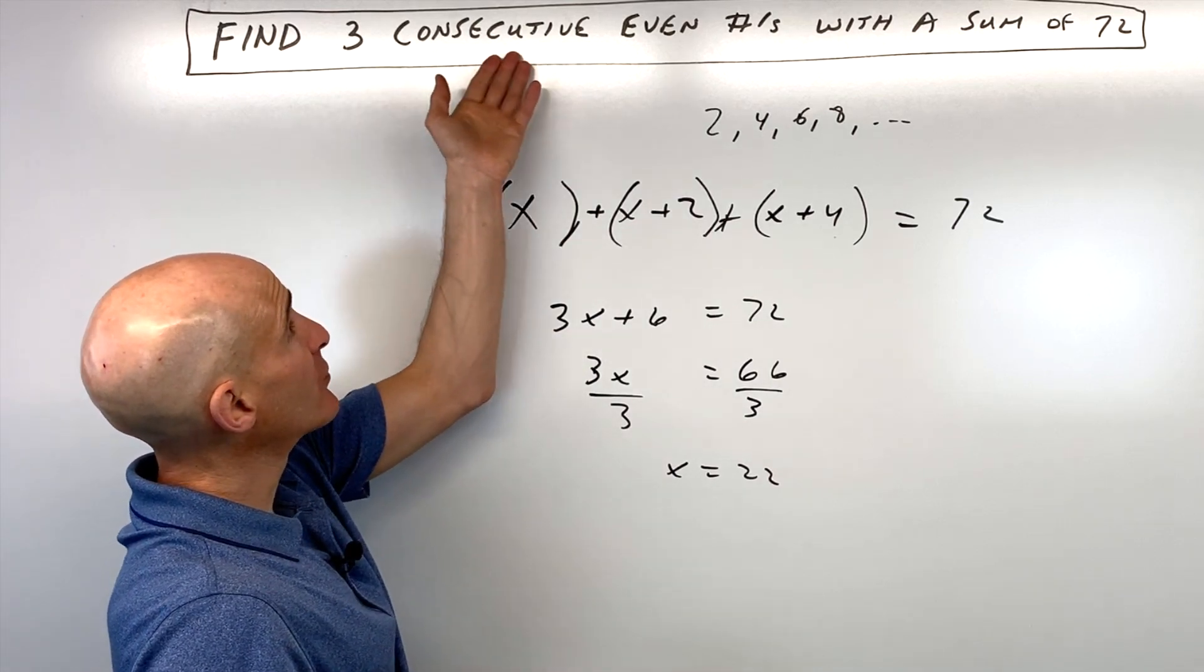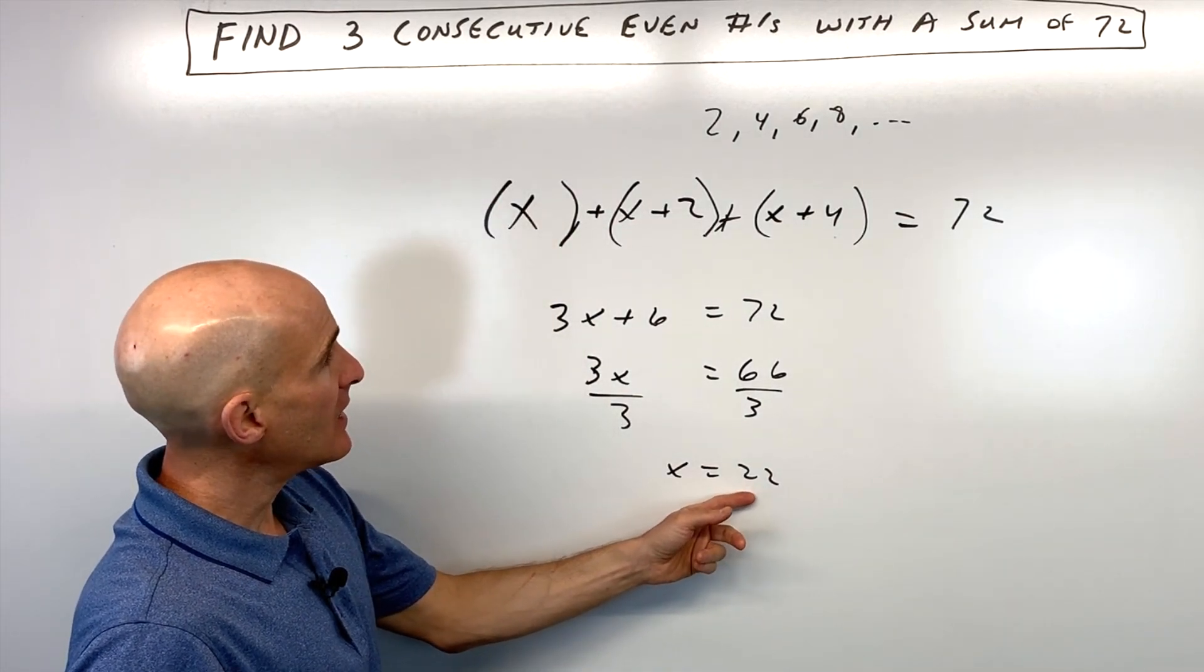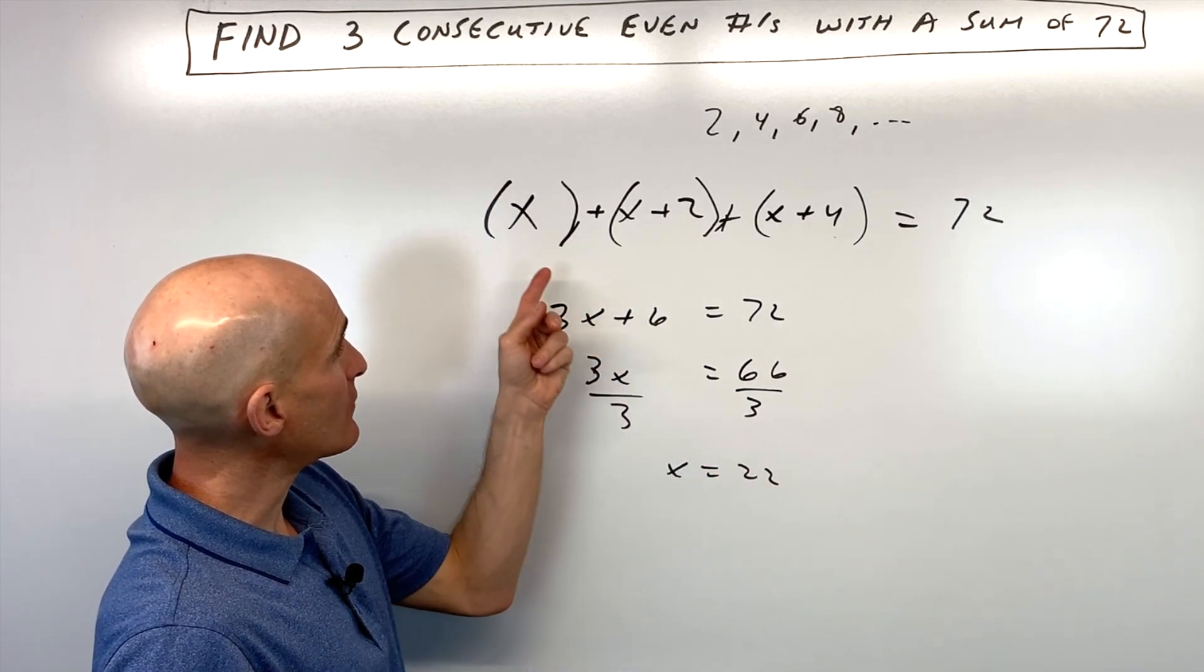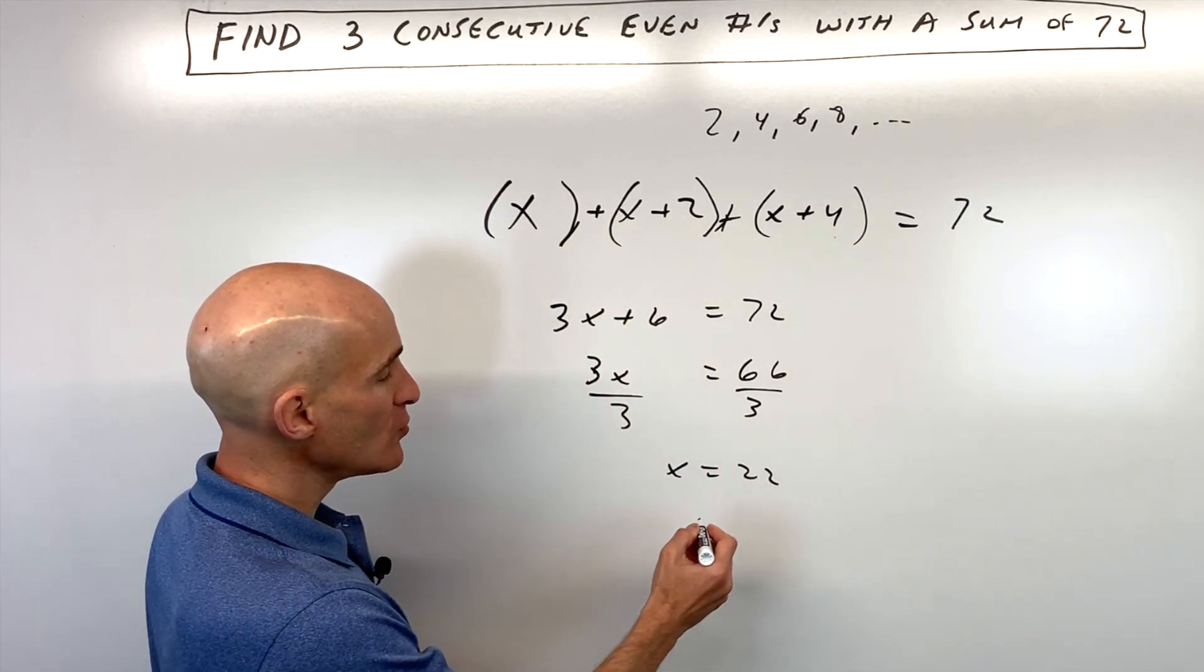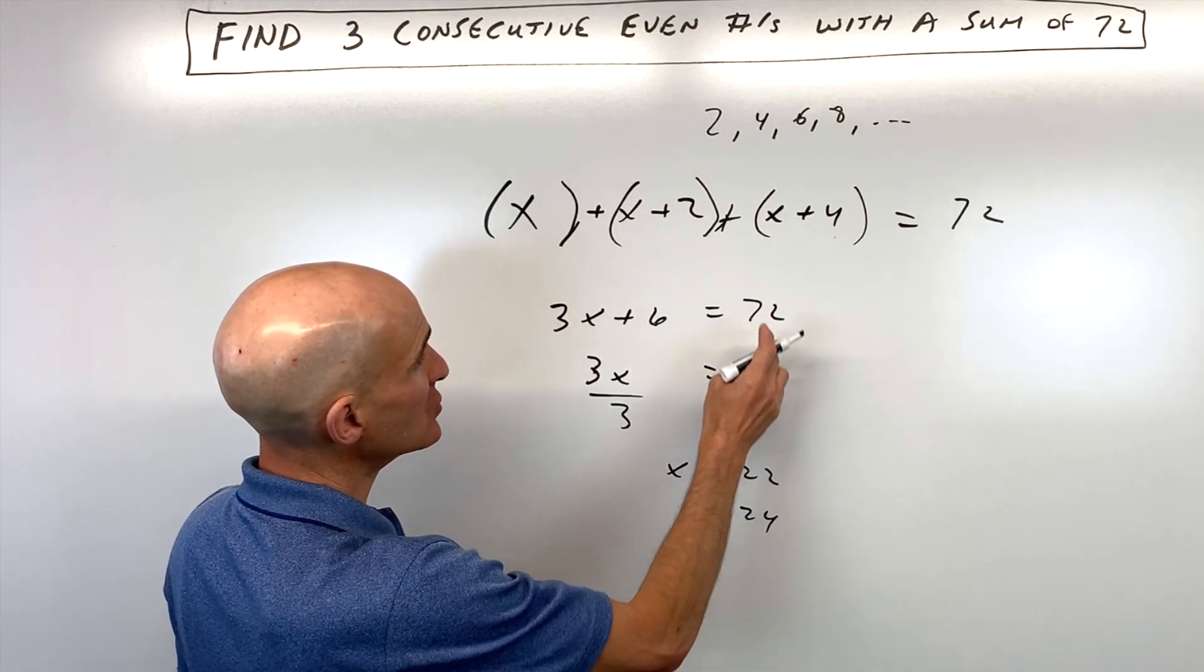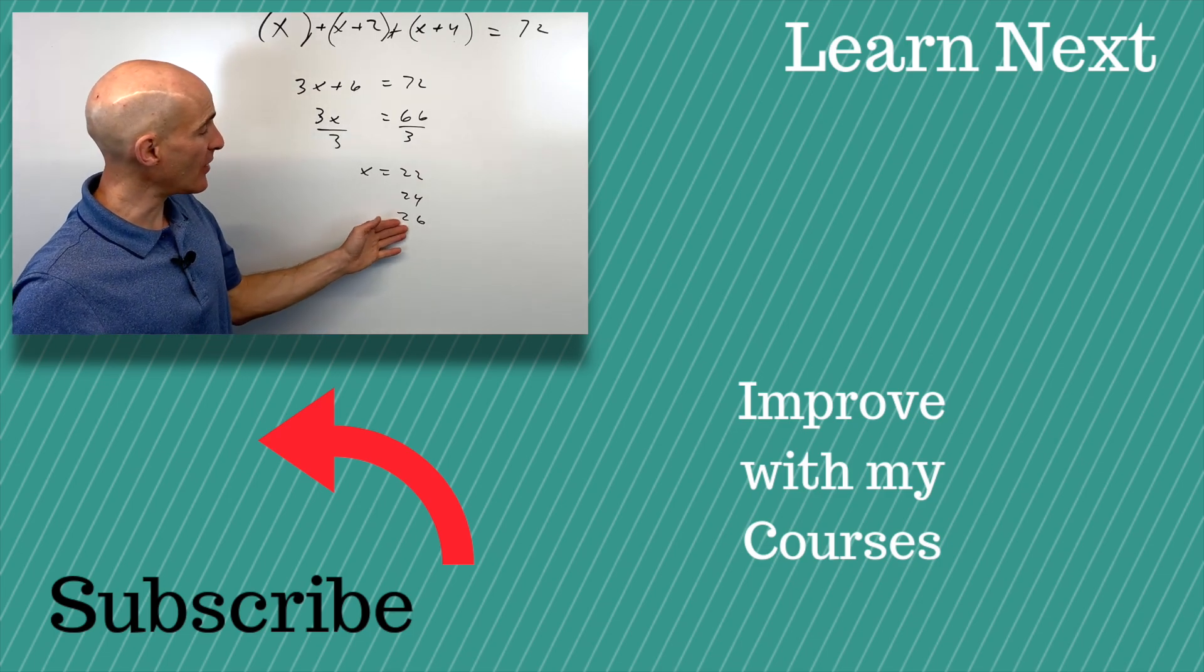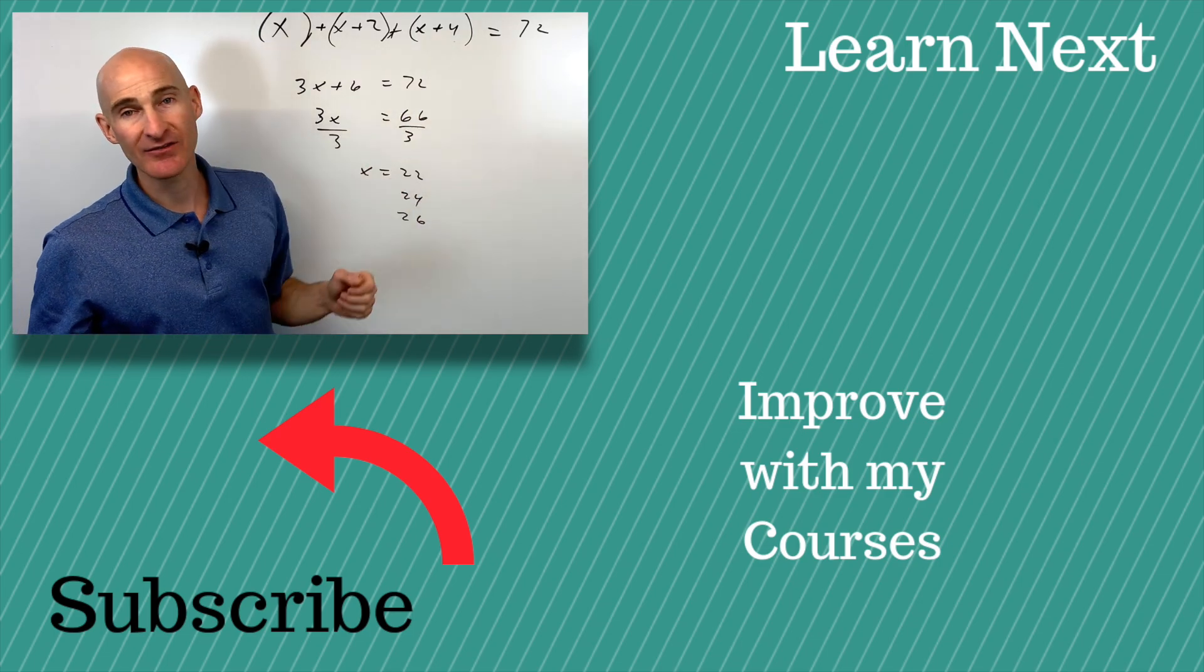Now, we want to find the three numbers that are consecutive that add to 72. x is 22. That's our first number. The next number is going to be 2 more, so that's going to be 24. And then the third number is going to be 22 plus 4, which is 26. And you can verify by adding those together that you're getting a sum of 72.